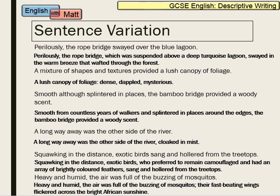'Squawking in the distance, exotic birds, who preferred to remain camouflaged and had an array of brightly coloured feathers, sang and hollered from the treetops' — again, a complex sentence. And at the bottom: 'Heavy and humid, the air was full of the buzzing of mosquitoes. Their fast-beating wings flickered across the bright African sunshine' — we've got a semicolon there as well, which is impressive punctuation. We've now changed the sentence openers and the sentence types. The reason the first paragraph wasn't very good was every sentence tended to be the same. It's also okay sometimes to have a one-word or two-word sentence — that's what published writers do.